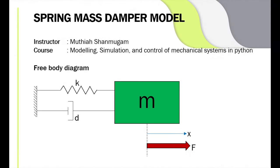In this chapter we will get to know the model description and the derivation of equations of motion for spring mass damper model.